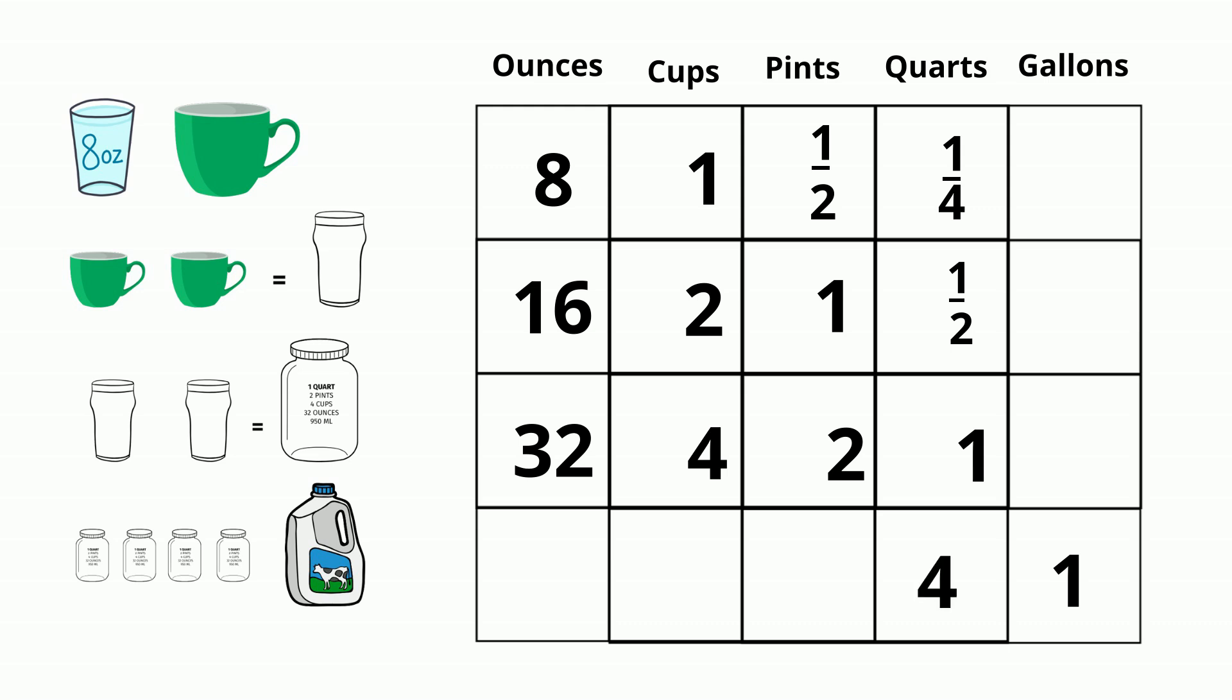There's 2 pints in a quart, so 4 times 2 is 8. Now, there's 2 cups in a pint, so I will multiply 8 times 2. That gives me 16. And then there's 8 ounces in a cup, so I will take 16 times 8. And that gives me 128 ounces. So 1 gallon equals 4 quarts, 8 pints, 16 cups, and 128 ounces.